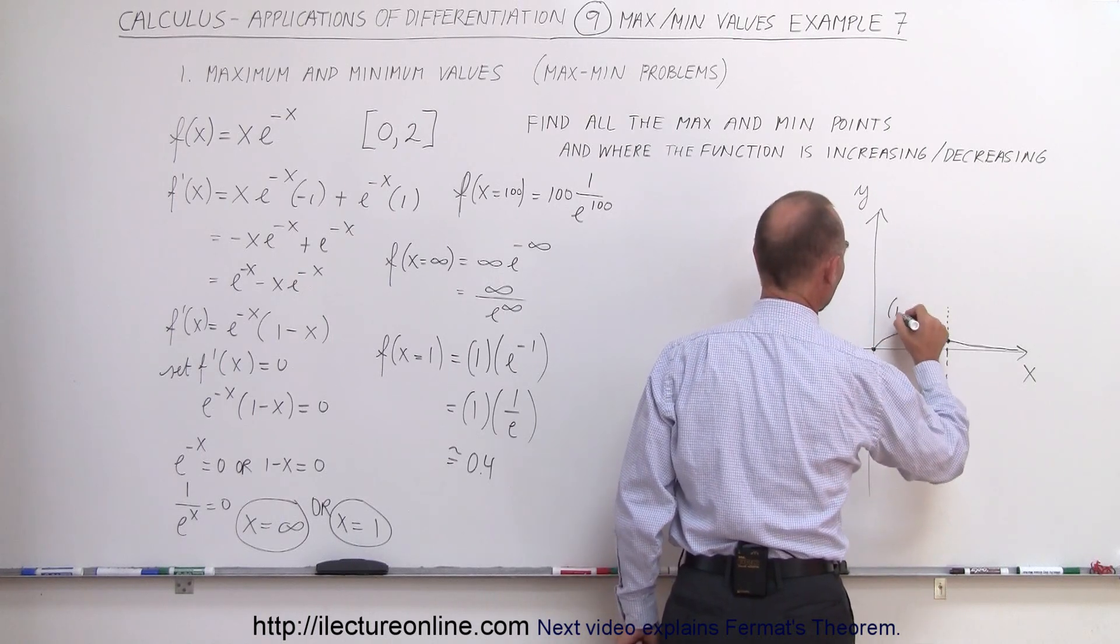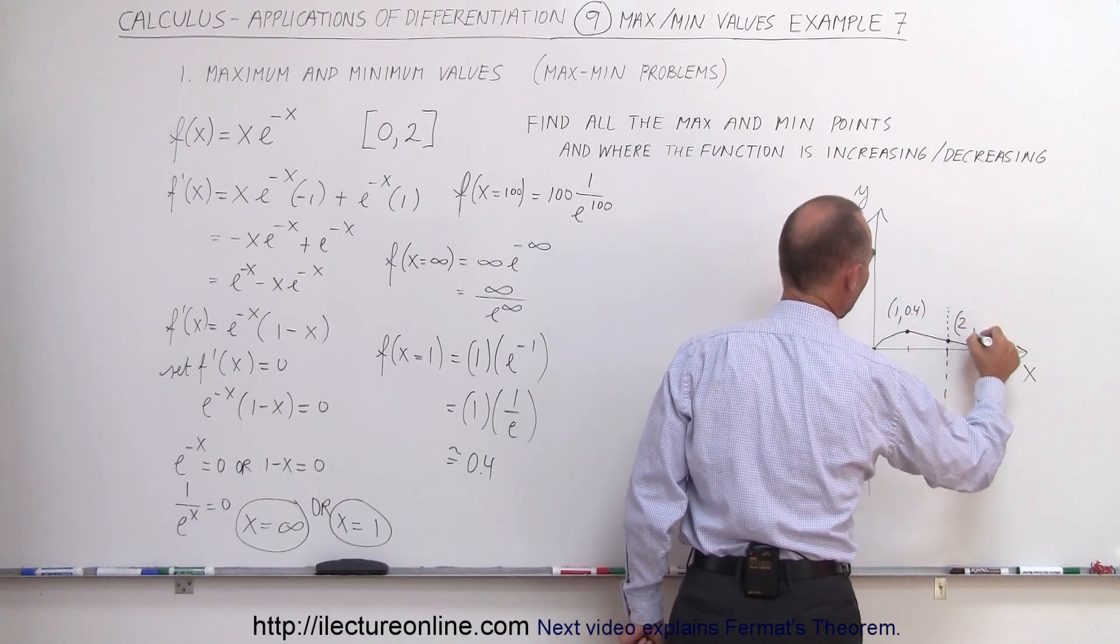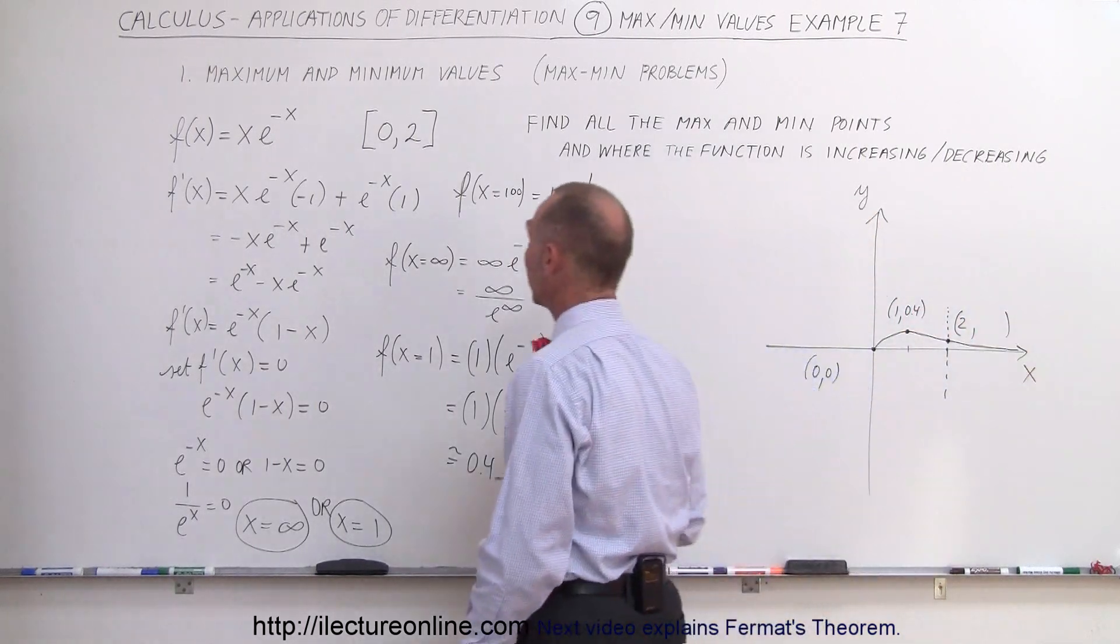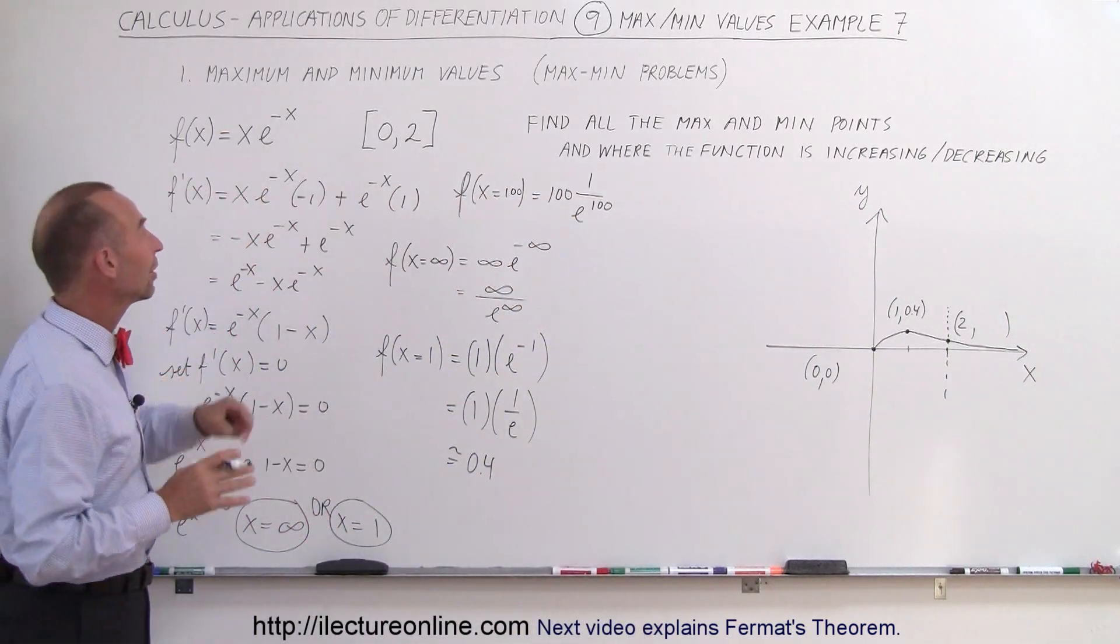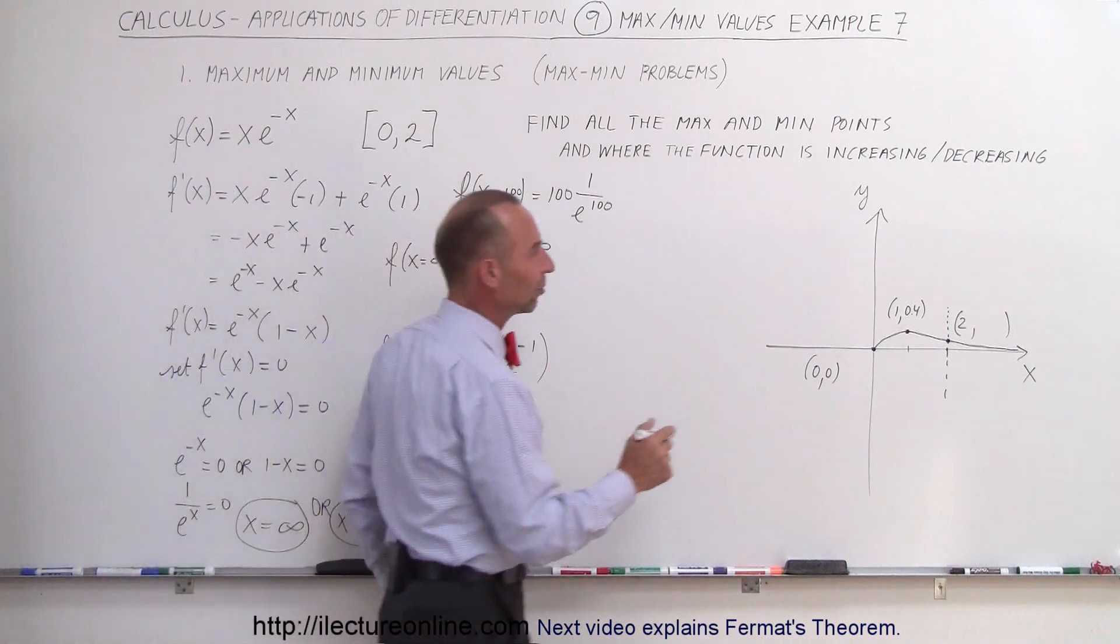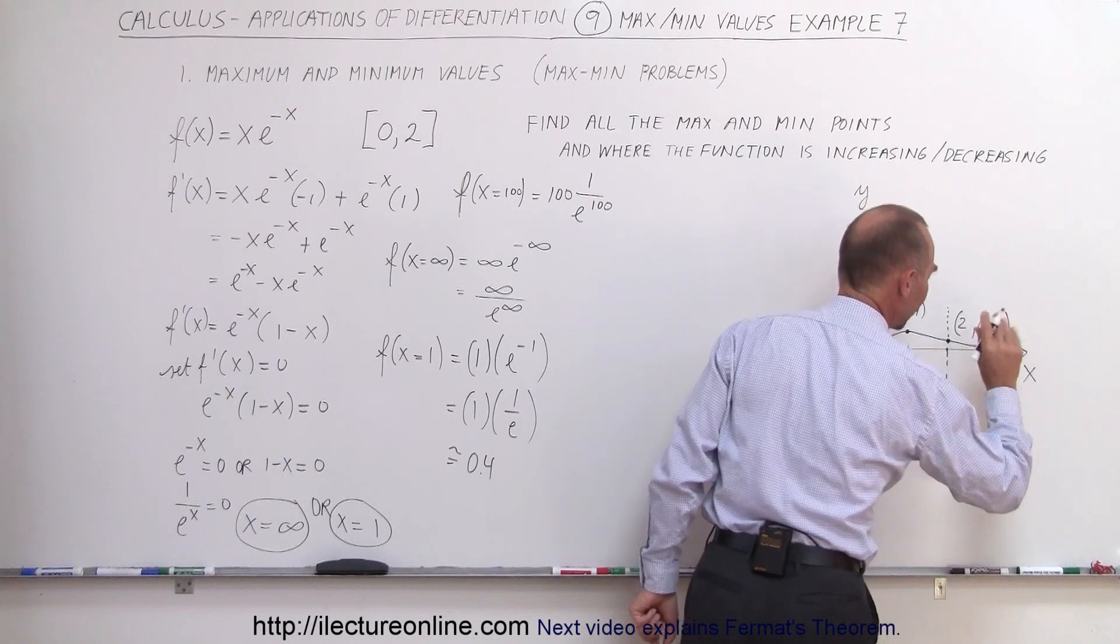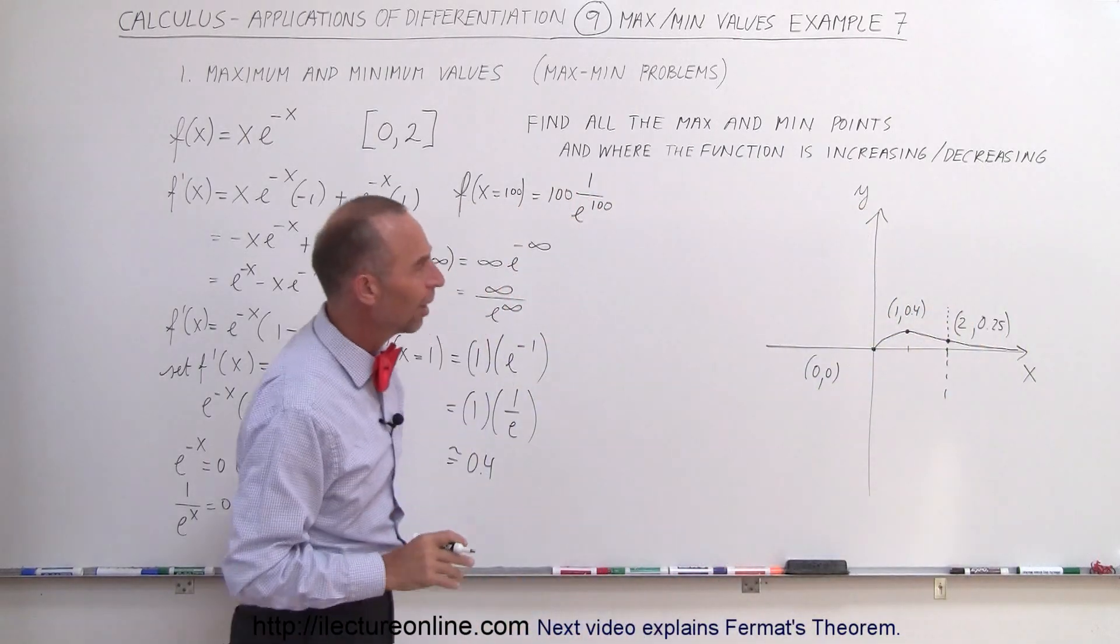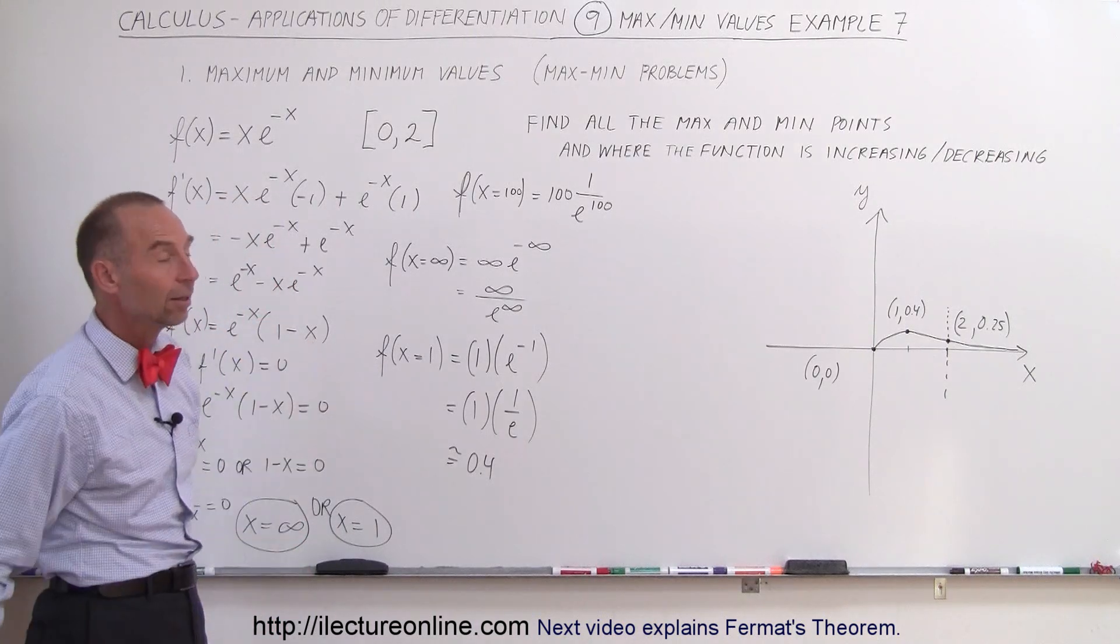We get (1, 0.4), and here we get x = 2. What would be the y value when x = 2? What is e^(-2)? That's roughly about 1/8 times 2, about 0.25. These are approximate values - you can grab your calculator for exact values. You can see that's what the function looks like in that interval.